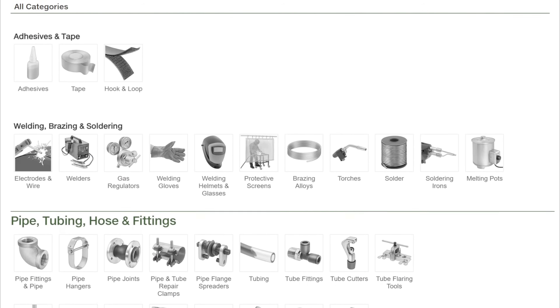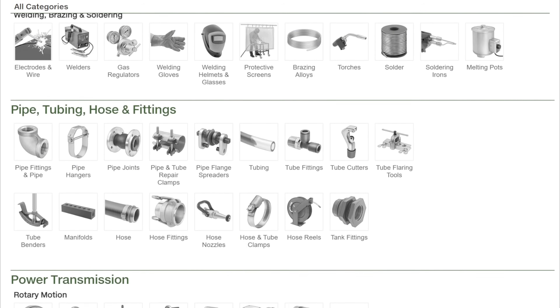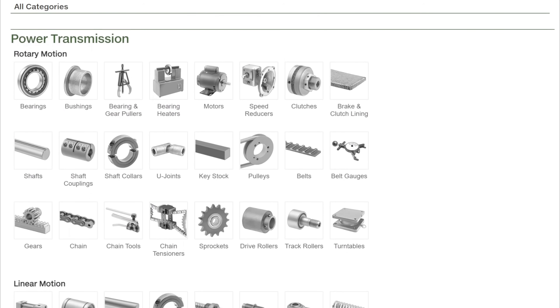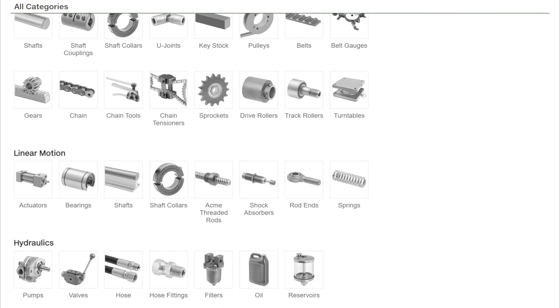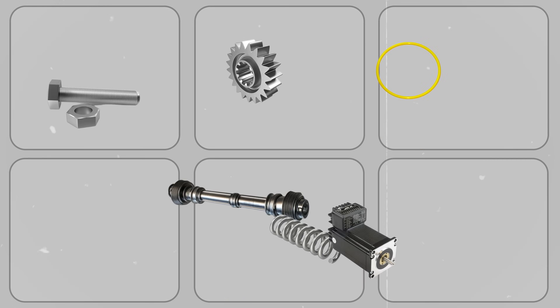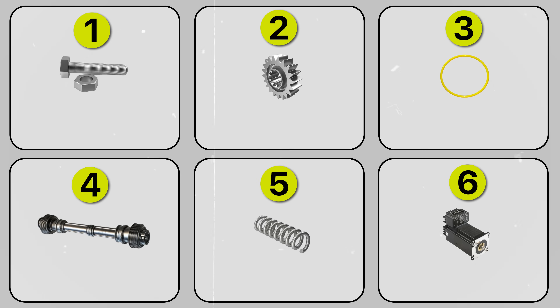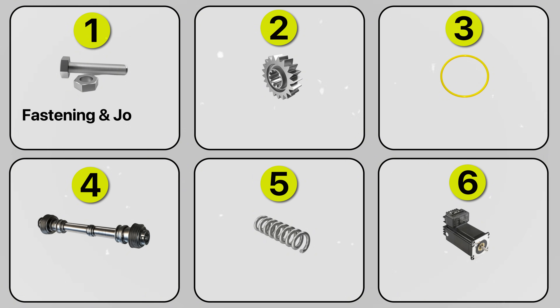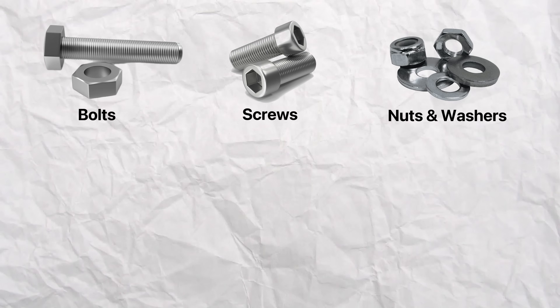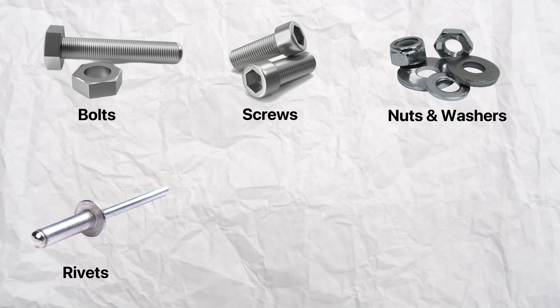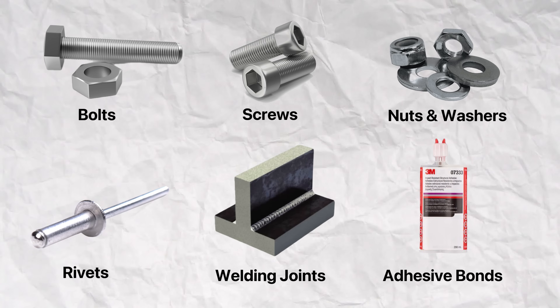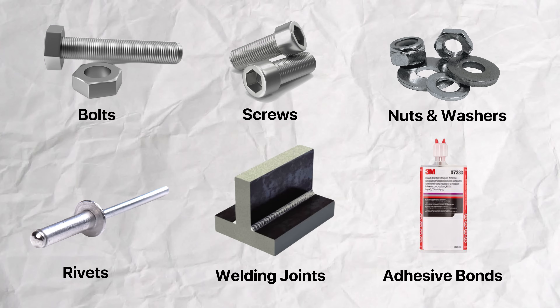Now, there are hundreds of off-the-shelf and customized machine elements or mechanical hardware out there, but I like to organize them into six main categories based on their function. The first category is fastening and joining elements. You probably are familiar with a lot of these already. Bolts and screws, nuts and washers, rivets, welding joints, and adhesive bonds are all examples.